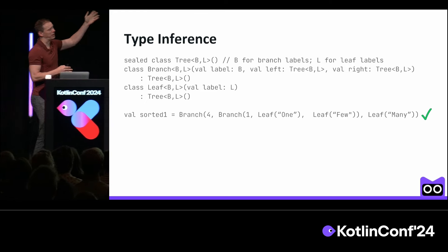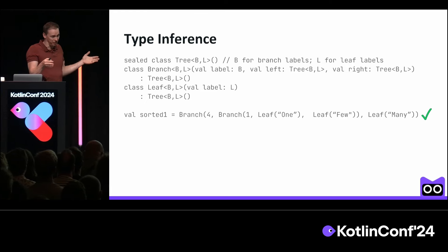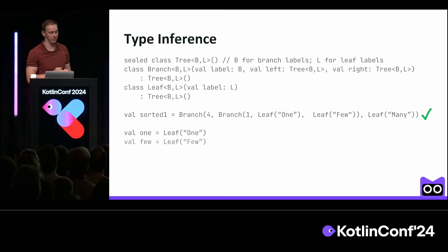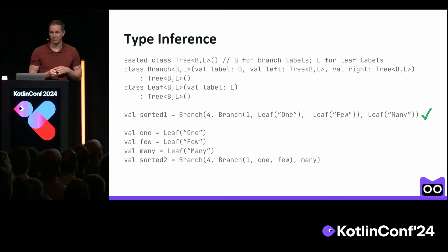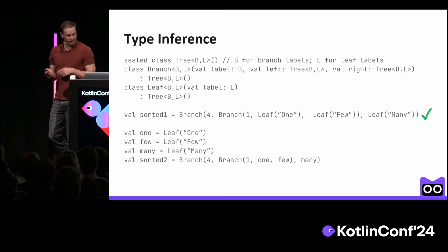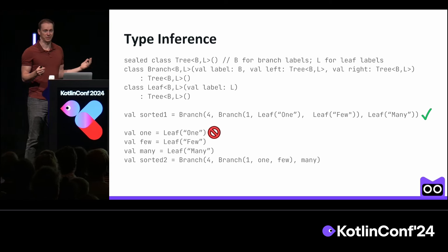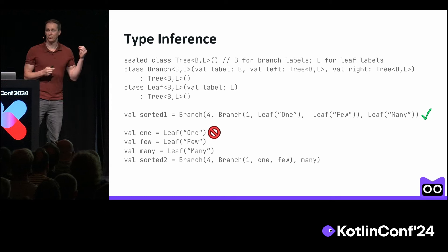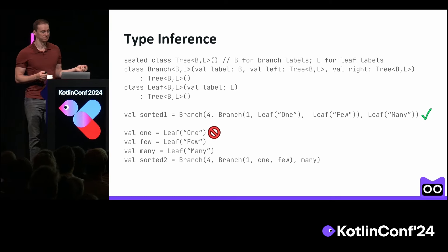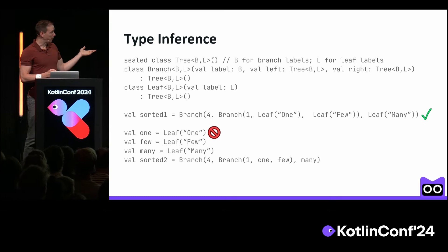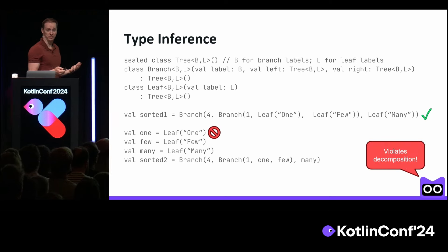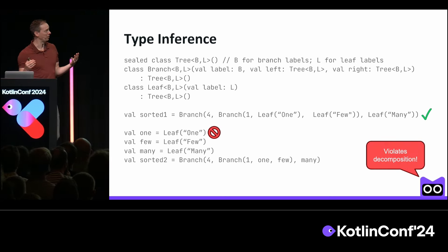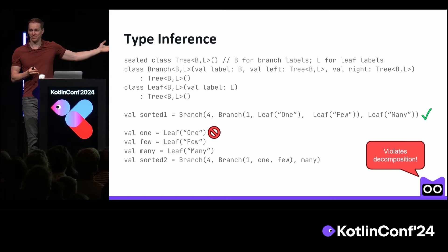But at the same time, this program is doing a lot — it's both sorting all the values and creating all the values. Let's break it down to smaller parts. We have our adjectives, and then we have the sorting of the adjectives. But if you do this, now the program doesn't type check anymore. The Kotlin compiler says it can't figure out what B is supposed to be for the leaf. And that's a problem because it violates a decomposition principle — you want to be able to break large programs into smaller programs and not have that break the type checker.